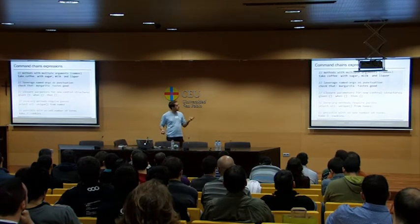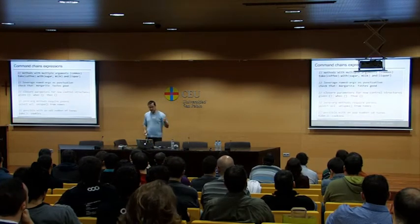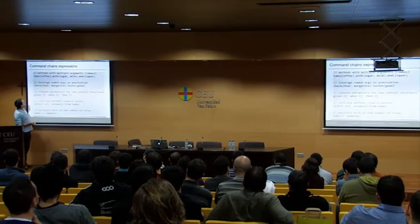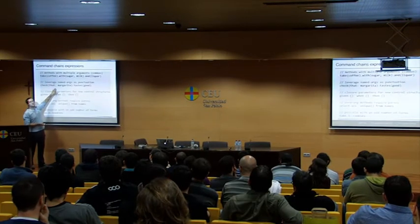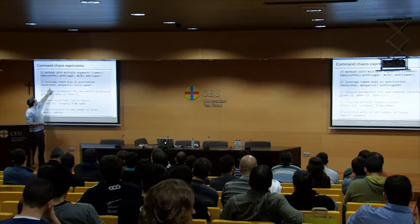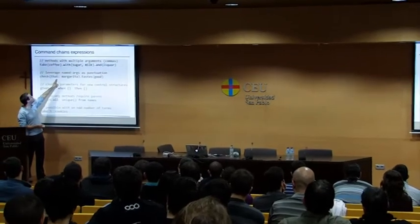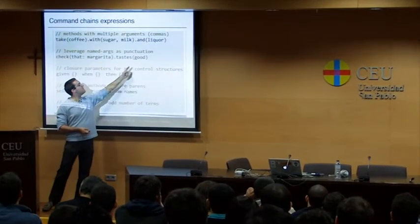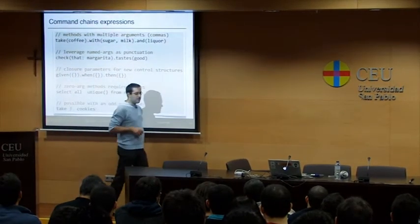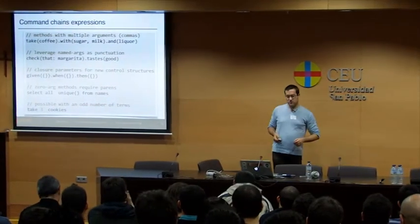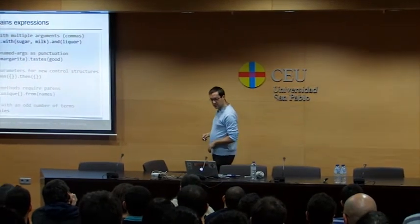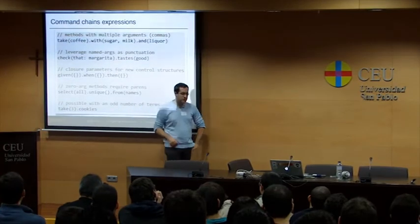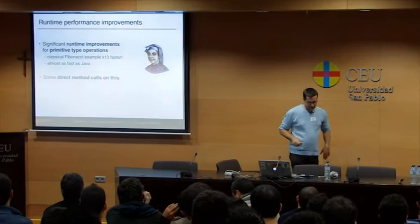"Take three cookies" is also allowed for an odd number of terms in your sentences. Putting back the parentheses: sugar and milk are actually two arguments for the "with" call. The "check that" example is interesting — the named parameter "tastes: good" is what's passed to "check", making it look like "check that" is the call. For closures, just put parentheses around the closure. "three.cookies" is a property access or map key access.